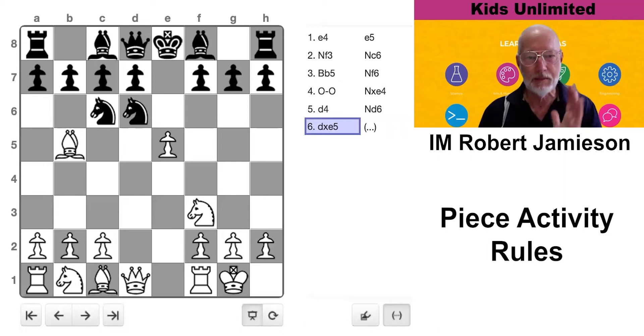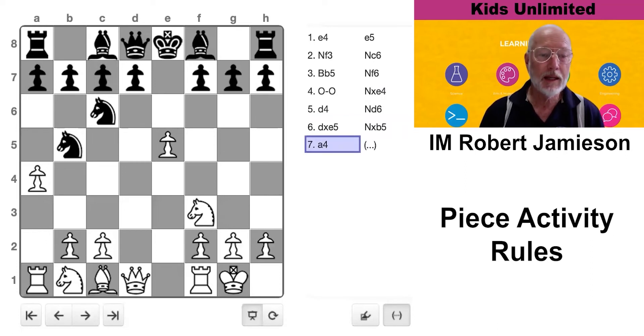Don't say, oh, I can't play pawn takes e5 because I lose bishop. End of analysis. Look that little bit deeper.